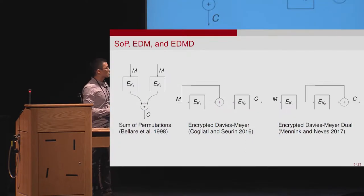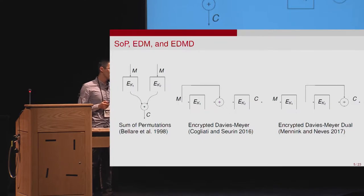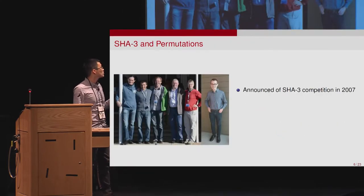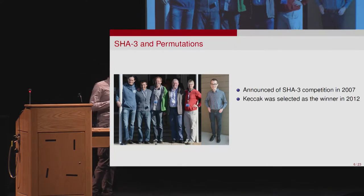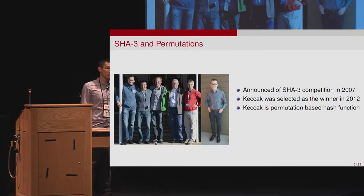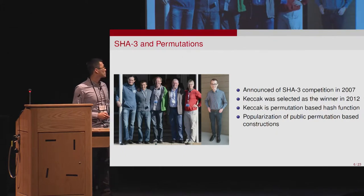All those constructions only use the block cipher in the forward direction. But the block cipher is usually designed to be efficient in both the forward and inverse directions, which makes the block cipher an over-engineered primitive for PRF design. Sparked by the SHA-3 competition, announced in 2007 with its winner in 2012, and its winner Keccak is a permutation-based hash function, this leads to increasing interest in constructions built on public random permutations.